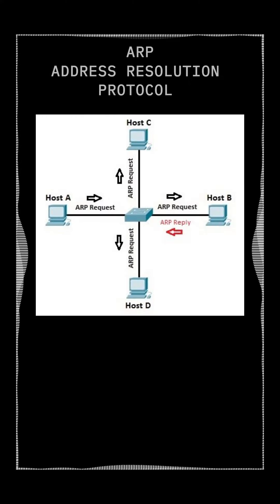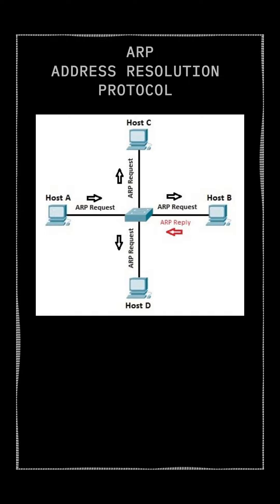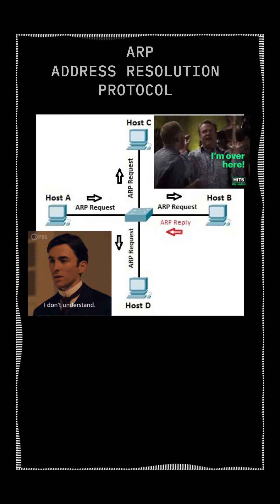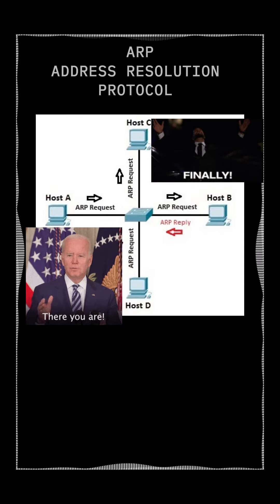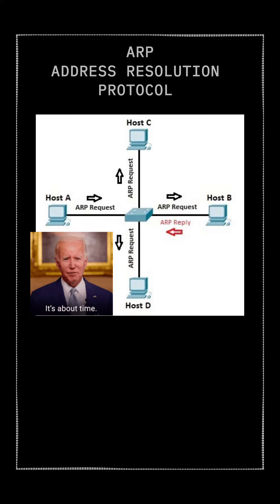Understanding Address Resolution Protocol, ARP. What is ARP? Address Resolution Protocol, ARP, is like a translator for computers on a network. It helps devices find each other's physical addresses, MAC addresses, based on their network addresses, IP addresses. Imagine a city where everyone has a house number (IP address) but needs to know the exact street address (MAC address) to deliver a package. ARP is the postal worker who figures out that information.